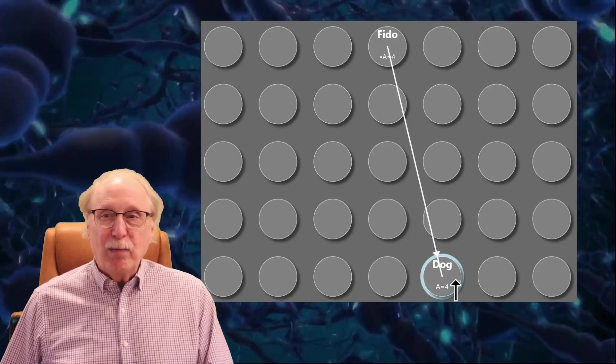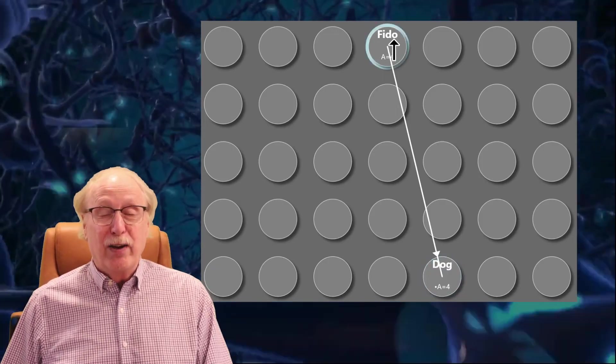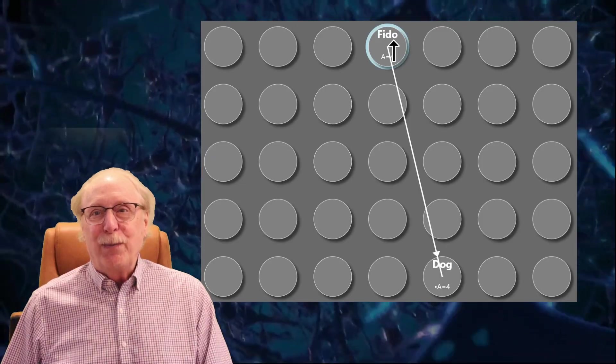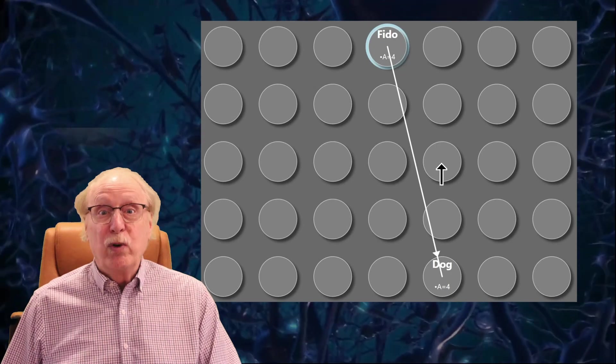One obvious problem is that this network will answer dog to any query about Fido, so it's not very useful. Let's change it so it will only respond to dog Iza queries.